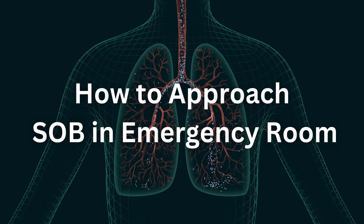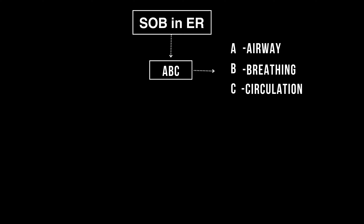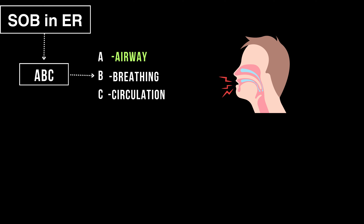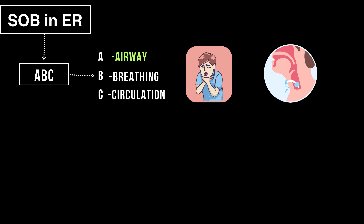First things first, always start with the ABCs — airway, breathing, and circulation. Make sure the patient has a clear airway. If they're struggling to breathe, this is your top priority. Check if the patient is speaking or making sounds. If they can, their airway is likely open. If not, look for obstructions and be ready to intervene.